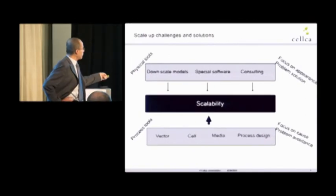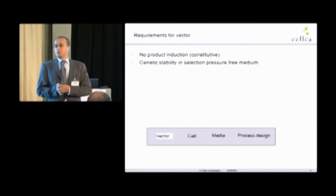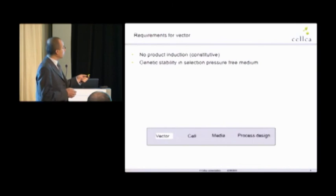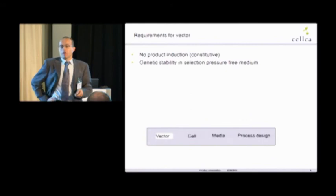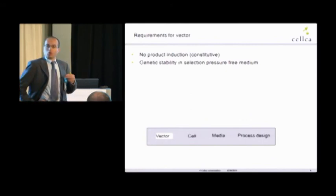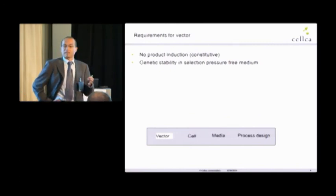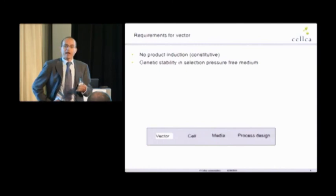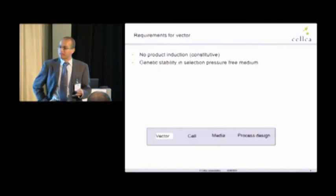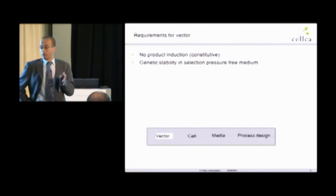Let's start with vector. When we design a production process which should be scalable, I should avoid product induction in production fermenter. There are some publications that you can grow the cells to a certain number and then add something into the bioreactor at a certain day, for example at day five, to induce product formation. But why should I add something? That increases the complexity and the risk. Why should I not implement a promoter which expresses my gene of interest constitutively all the time?